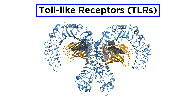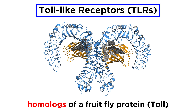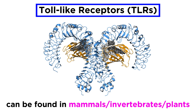One of the most well-studied families of pattern recognition receptors are the Toll-like receptors, or TLRs. These receptors are homologues of a fruit fly protein called Toll, which is involved in defense against bacterial and fungal pathogens. TLR homologues can be found in many mammals, other invertebrates, and even plants, which tells us that this family of sensors is very ancient in an evolutionary context.